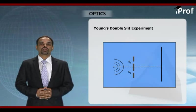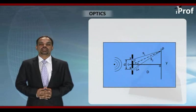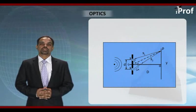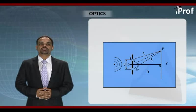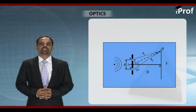S1, S2 representing two long narrow slits. And then we have a screen at a separation of capital D from the plane of slits. The separation between slit S1 and S2 is taken as small d. And our monochromatic source is placed symmetrically with respect to S1 and S2.